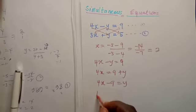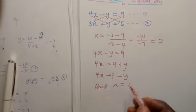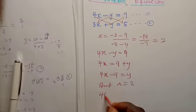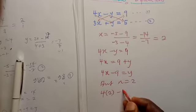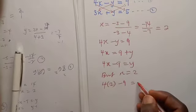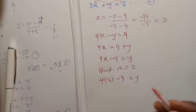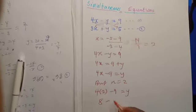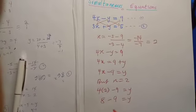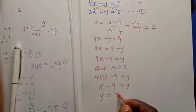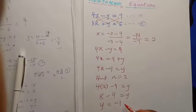But our x equals 2, so we can substitute: 4 times 2 minus 9 equals y. In this case, we are going to have 8 minus 9 equals y, so y equals minus 1.